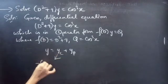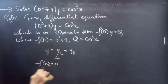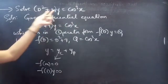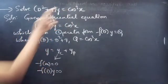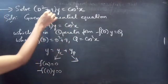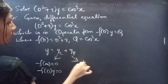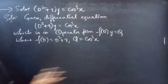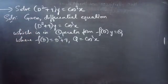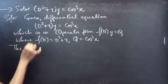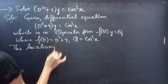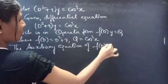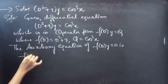We will find yc using the roots of the auxiliary equation of the homogeneous equation. By taking the RHS to 0, we get f(D)·y = 0, which is the homogeneous equation. We will find yp using (1/f(D))·Q. The auxiliary equation of f(D)·y = 0 is f(m) = 0.